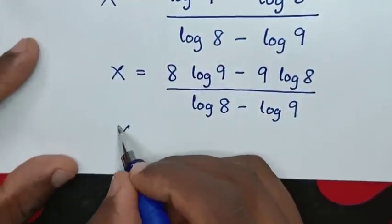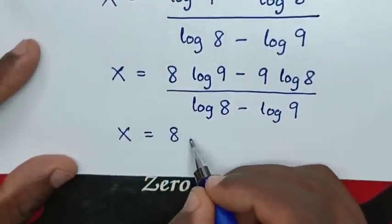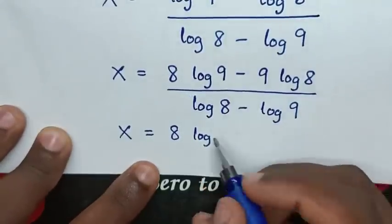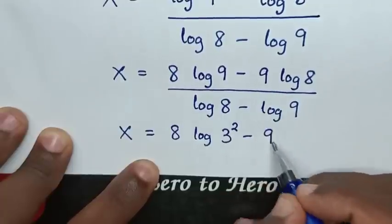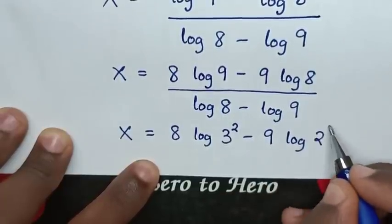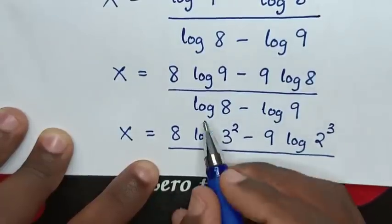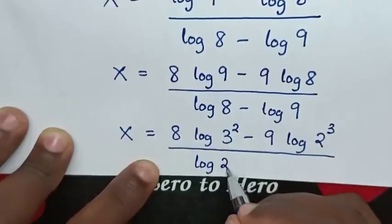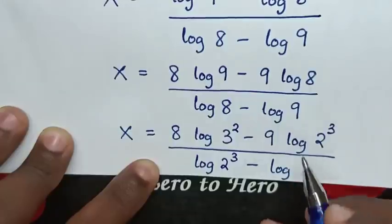Then, in the next step, our equation will be x is equal to 8 log of 9, where 9 is the same as 3 power of 2, minus 9 log of 8, where 8 is the same as 2 power of 3, then over log of 8 minus log of 9, where 9 is the same as 3 power of 2.